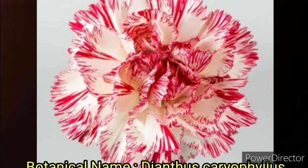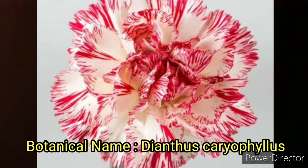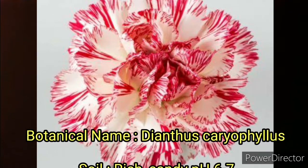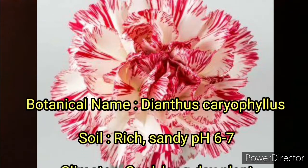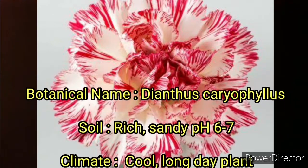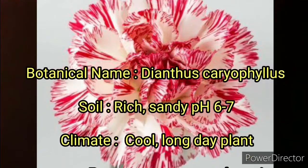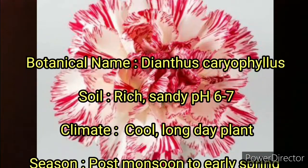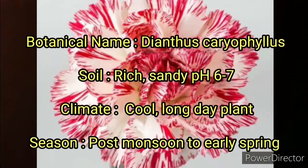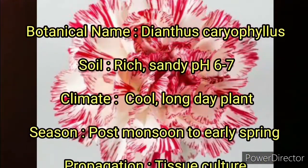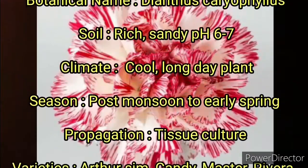Its botanical name is Dianthus caryophyllus. Soil required is rich and sandy and the pH should be 6 to 7. Climate required is cool, as they are long-day plants, and the season in which they are grown is post-monsoon to early spring.